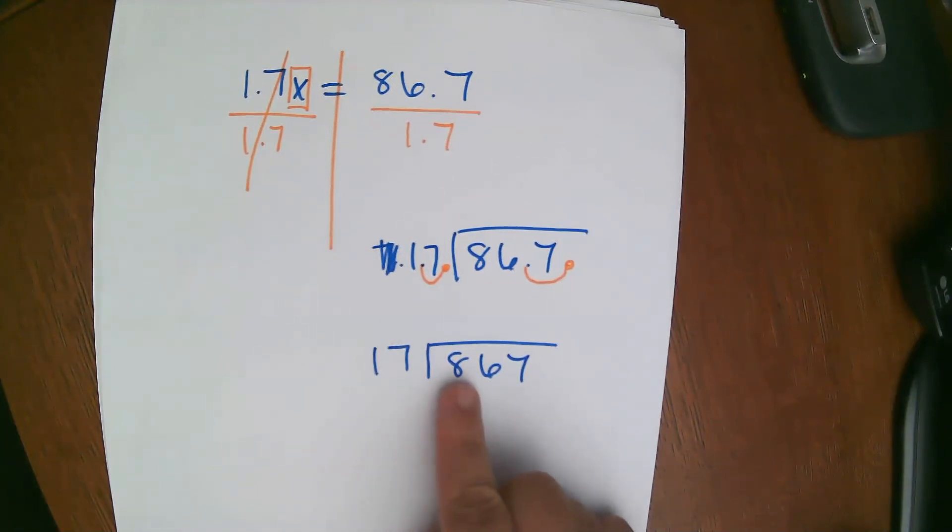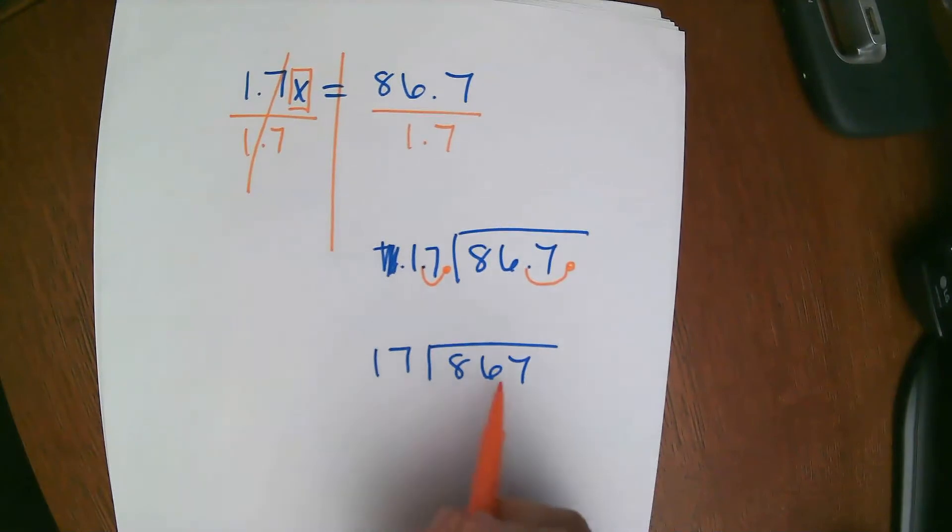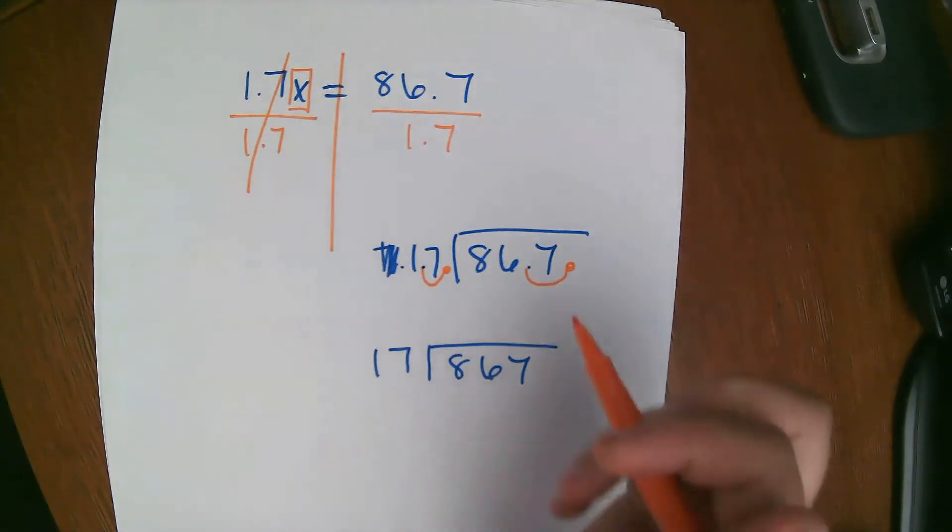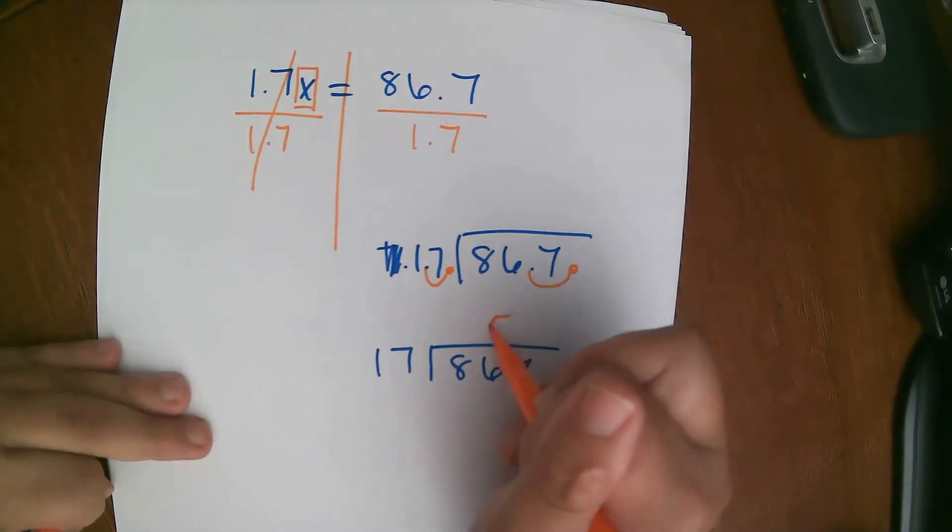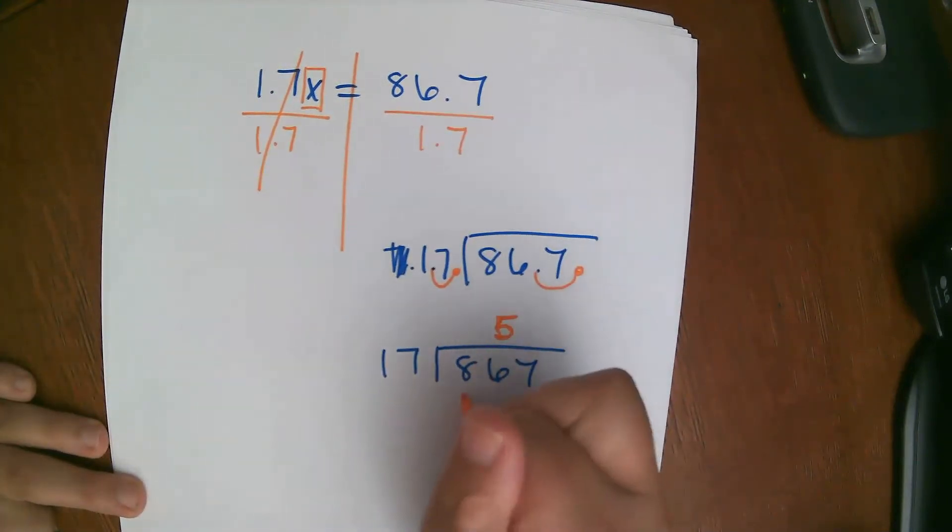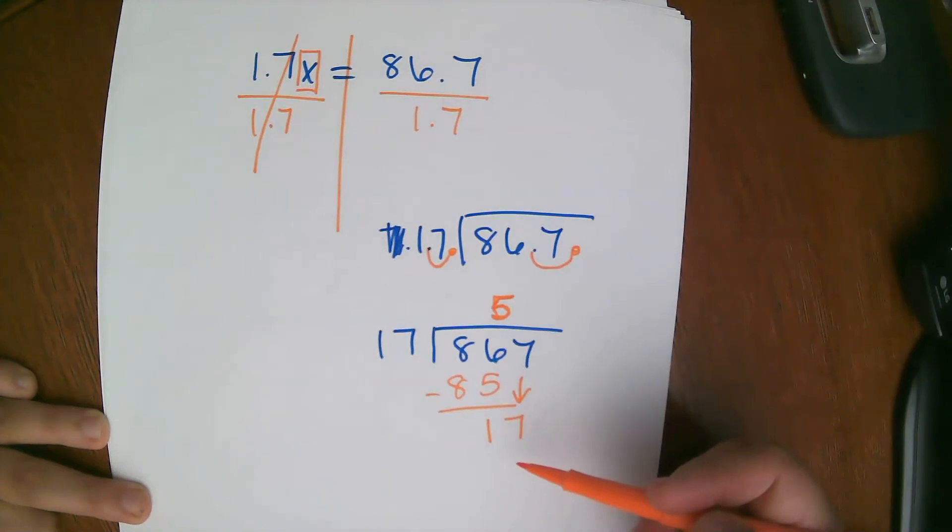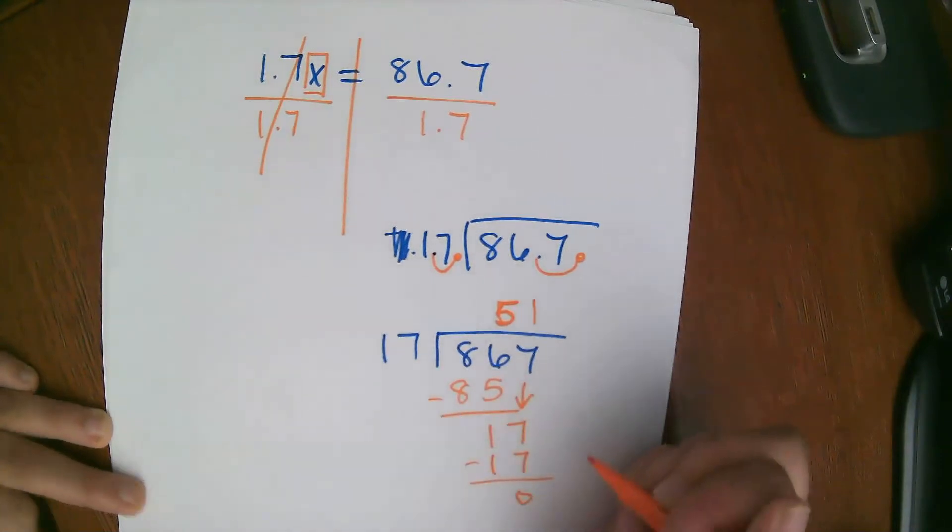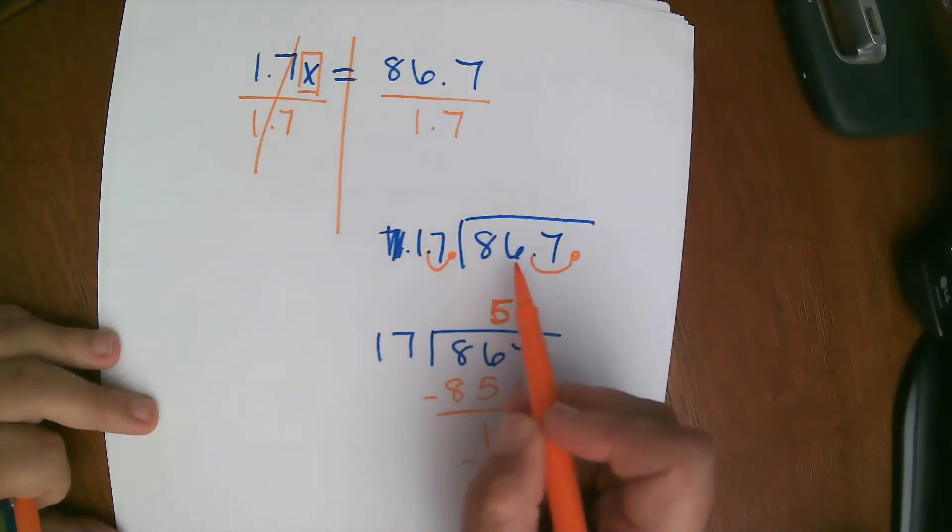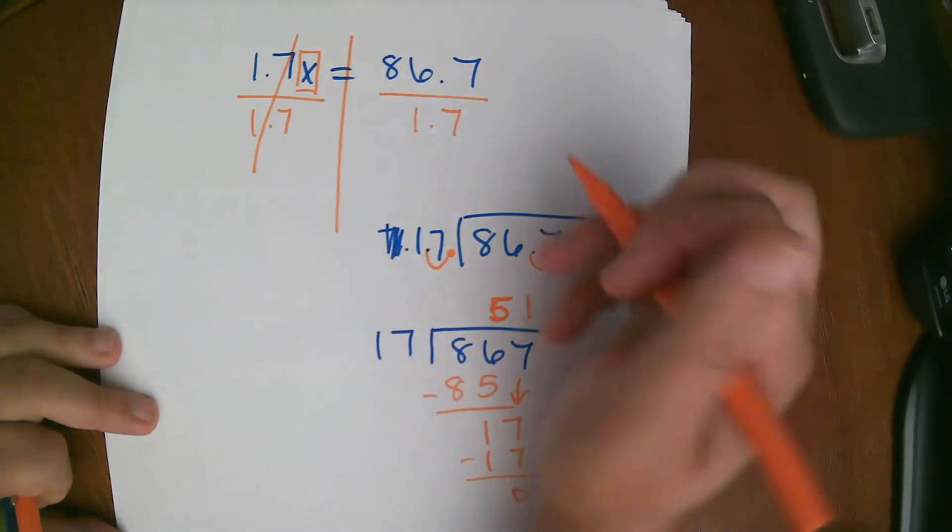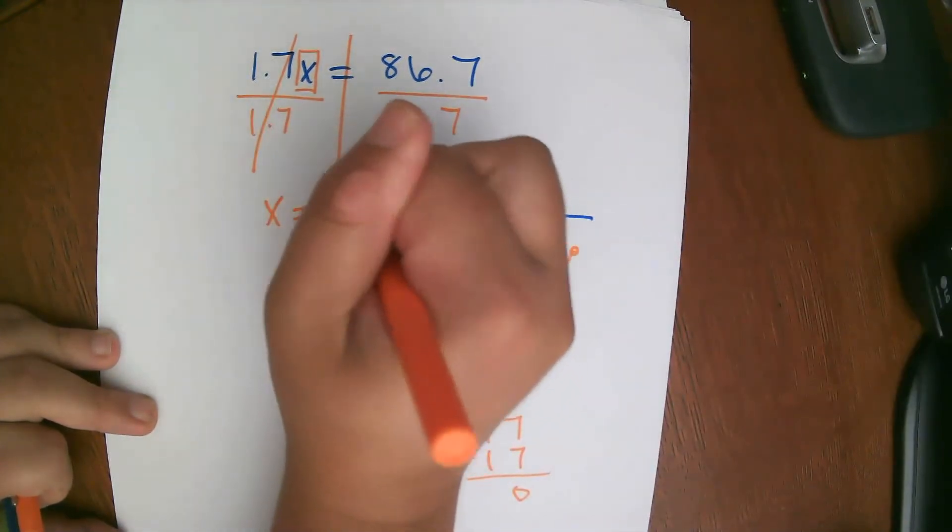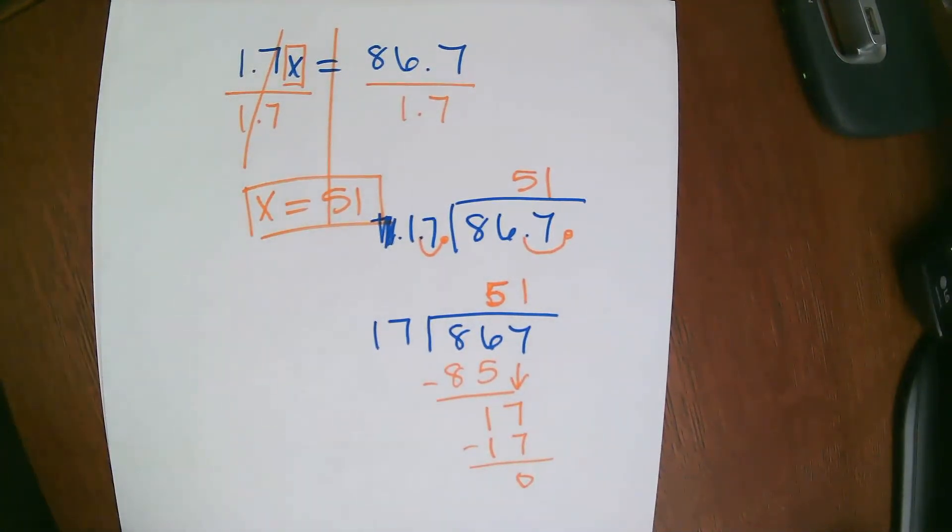So now we need to divide it out. So how many times? Well, can 17 go into 8? Nope. 8 is too small. Can 17 go into 86? It sure can. So let's look at our multiplication chart. And see how many times 17 goes into 86. So why don't you do that right now? I'll give you a second. How many times does 17 go into 86? Hopefully you saw it. And it was 5 times. That didn't come out right. 5 times. All right. So 17 times 5 is 85. So 6 minus 5 is 1. And bring down the 7. And then how many times does 17 go into 17? Well, that's easy. Just 1 times. So 17 times 1 is 17. So 1 and 7 tenths or 86 and 7 tenths divided by 1 and 7 tenths is 51. So x equals 51.